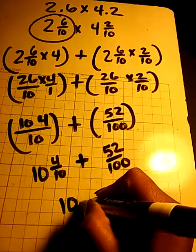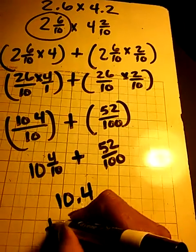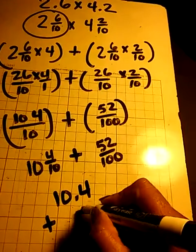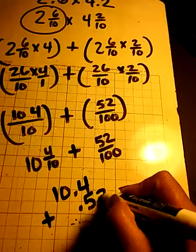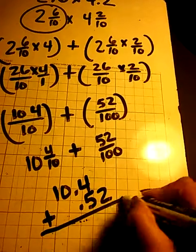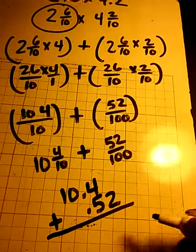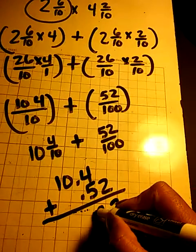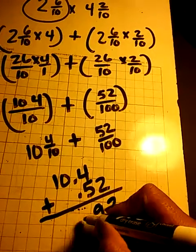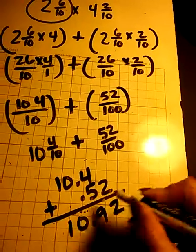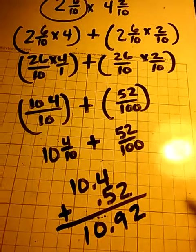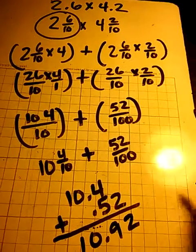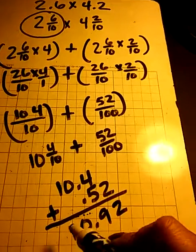So we have 10 and 4 tenths, plus 52 hundredths. If we add those, we get 10 and 92 hundredths.